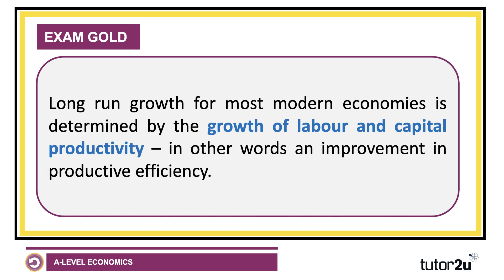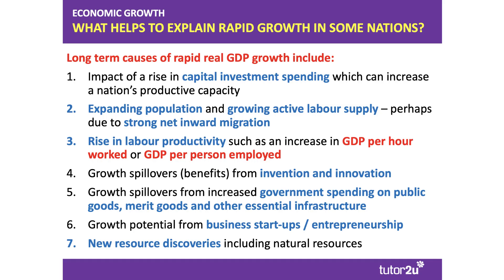Long-run growth, for most modern economies, is fundamentally determined by the growth of labour and capital productivity — the growth of output per person employed or output per hour worked from labour, and also the productive efficiency of capital machinery and capital inputs used in production. A really key point to take away is that productivity is vital for long-term growth. However, it's not the only factor, so let's look at some others.